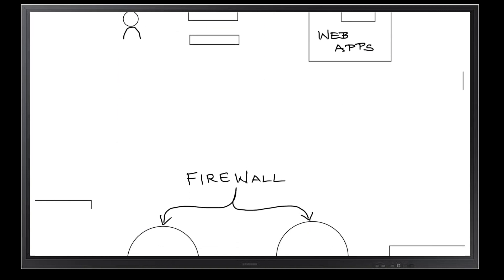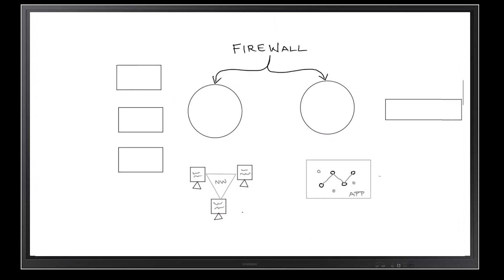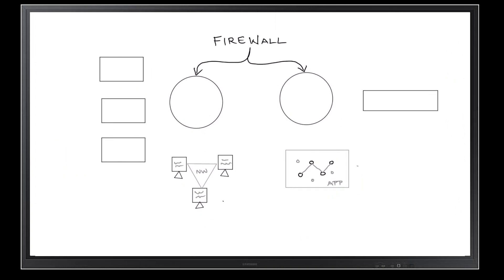Broadly speaking, there are two kinds of firewalls. One is the network firewall, which we historically call a firewall. It filters traffic based on three key aspects: one, IP address; second, port; and the third, ACL — access control list.